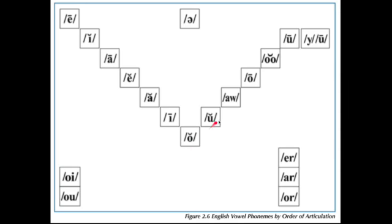As you work your way back up, you get to U. Now your lips are kind of pinched together and your jaw is closed. That's one way to think about it.